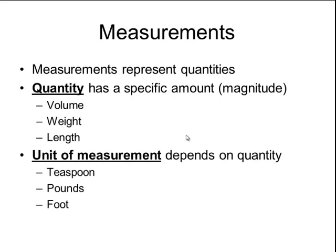When we measure those quantities, we measure them in certain units. The unit of measurement depends on the quantity that you are measuring. For example, if you're measuring volume, you might use the unit teaspoon. If you're measuring weight, you might use the unit pound, and if you're measuring length, you might measure something in feet.